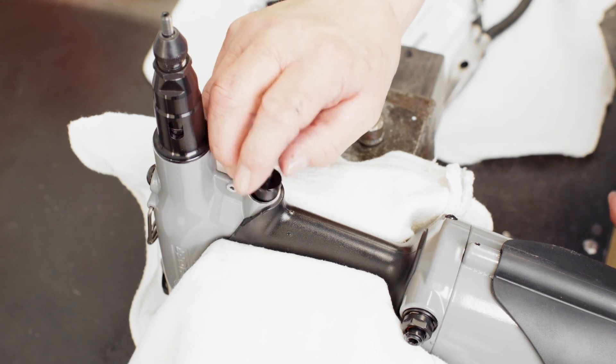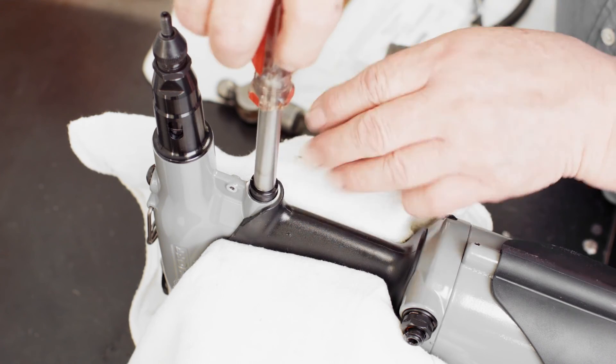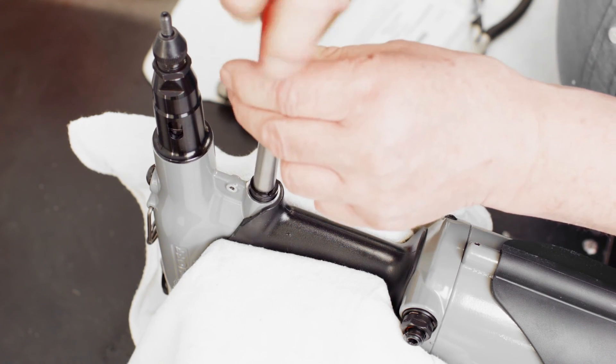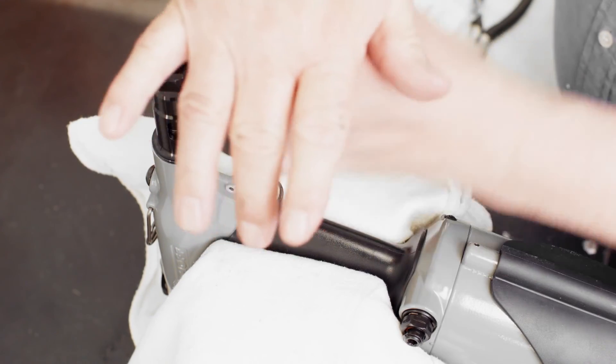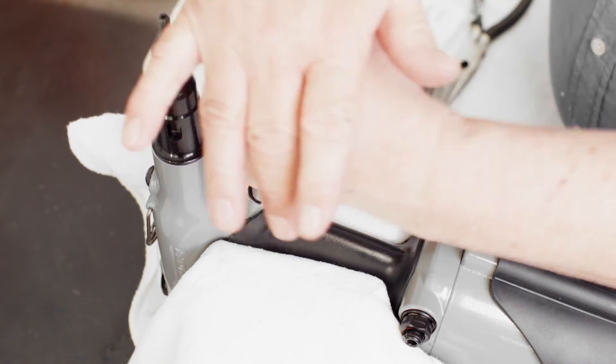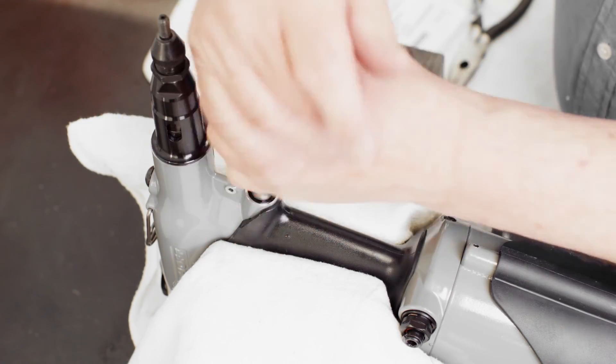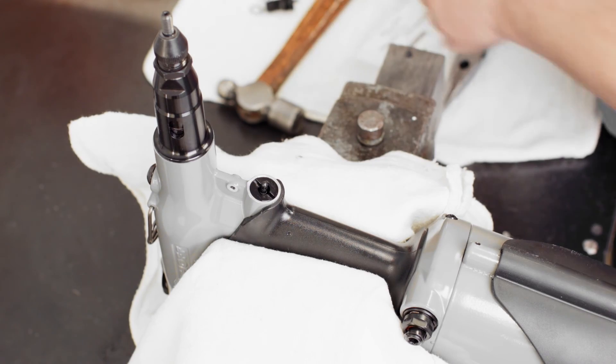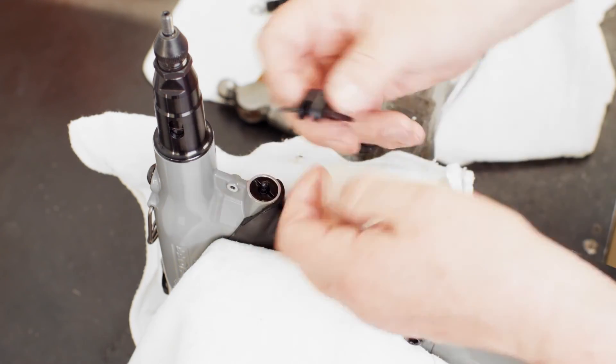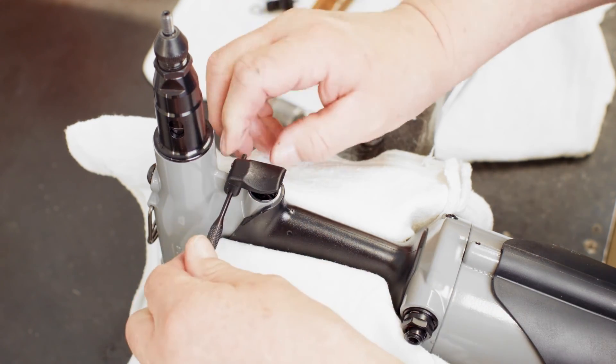Insert the new trigger valve back into the trigger housing and tighten with a spanner wrench. Loctite or excessive torque is not required when installing the new trigger valve. Reinstall the plastic trigger and roll pin.